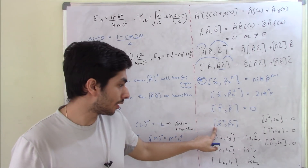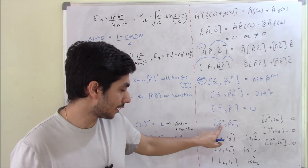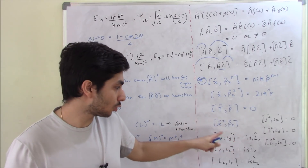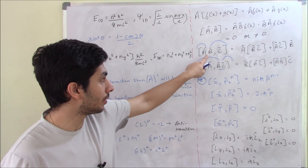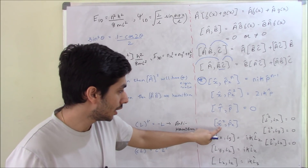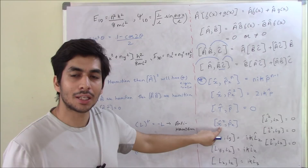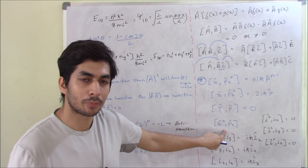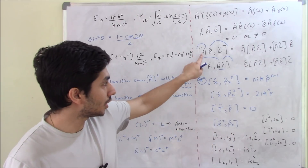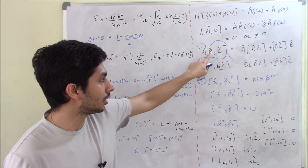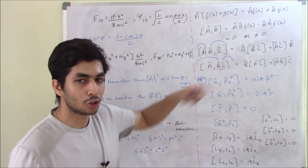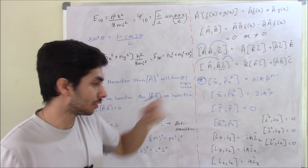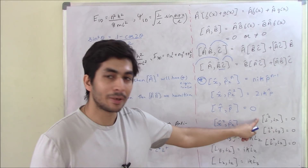If you try to find the commutator of x² and p_x, you can use the identity [AB, C], writing x² as x·x. So [x·x, p_x] — you can utilize the identity [AB, C] here. This is where those two formulas become very useful.